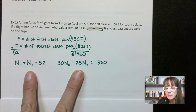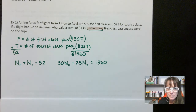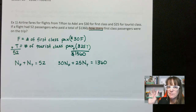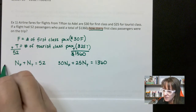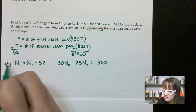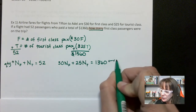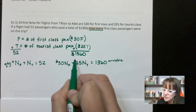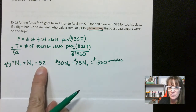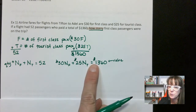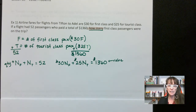I have two equations here with two variables, so I have to use a system of equations — which I can do by graphing (that's terrible) or by elimination or substitution. I want to point out that this is our quantity equation and this is our value equation. Notice how I have $30, $25, and $1,360. A common mistake is putting $1,360 in the quantity equation or $52 in the value equation. Don't make that mistake. Be very clear about which is your quantity and which is your value.